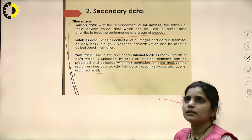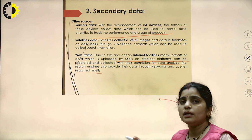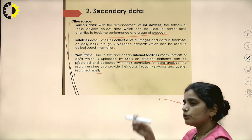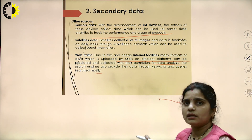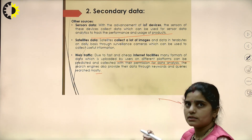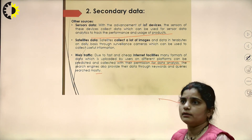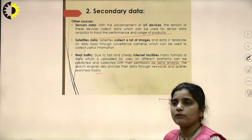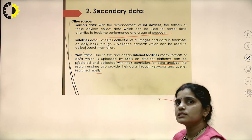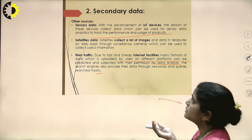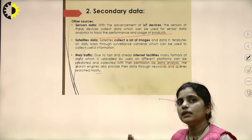Whenever we search any topic on Google, we see that a dropdown list opens with frequently asked questions and frequently asked queries. So, that is all about data and the different sources of data — how we can collect primary data, how we can collect secondary data, and what are the other sources through which we can collect data.